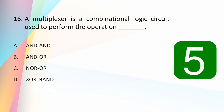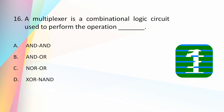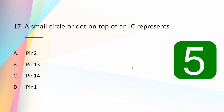A multiplexer is a combinational logic circuit used to perform which operation: AND-AND, OR-NOR, OR-XOR, or AND-OR? The answer is AND-OR. A multiplexer is a combinational circuit that acts as a data selector — it converts multiple inputs into one output and performs an OR function of different AND functions, as shown in a 4-to-1 multiplexer diagram.